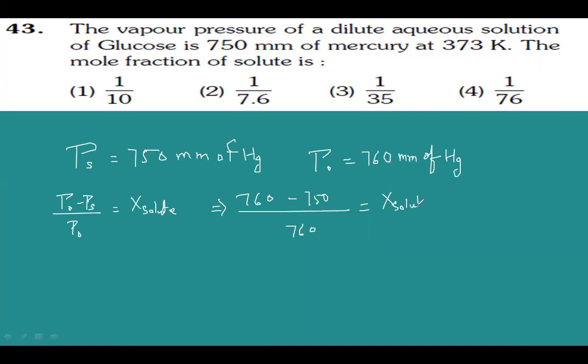This is a simple question. You get 10 upon 760, which simplifies to 1 upon 76. This option is our answer, option number 4.